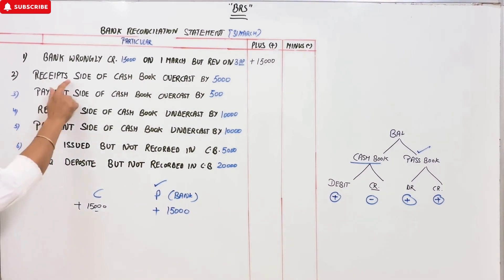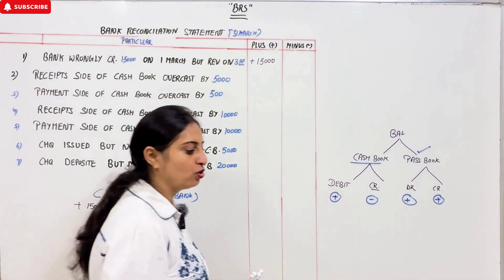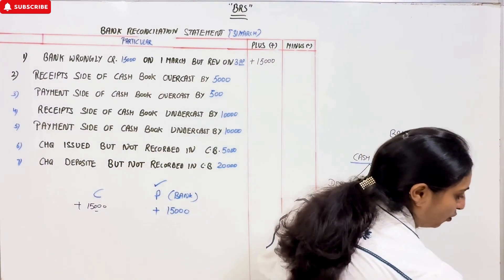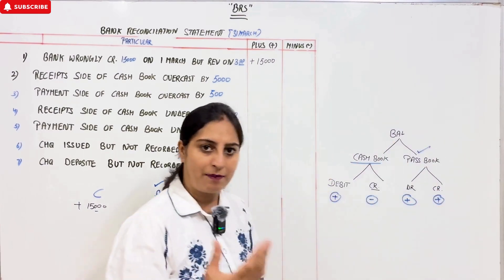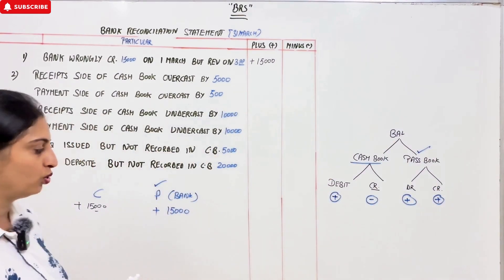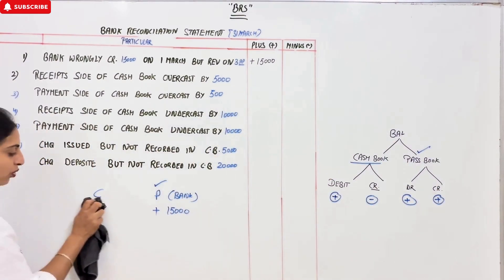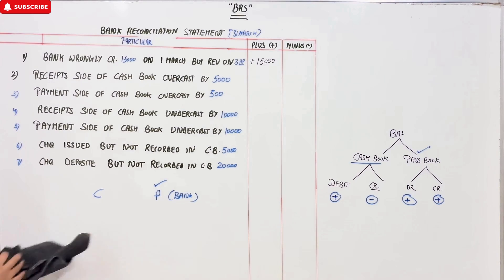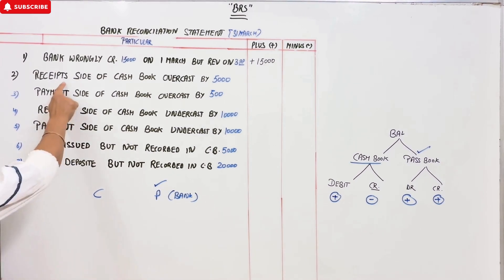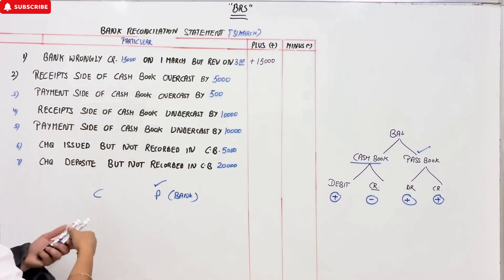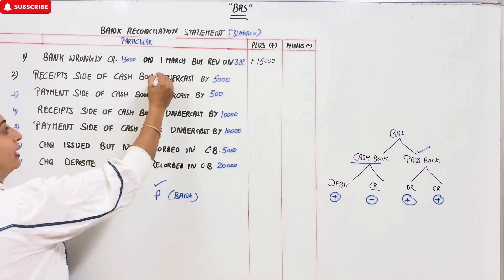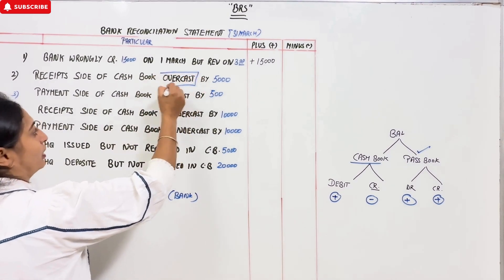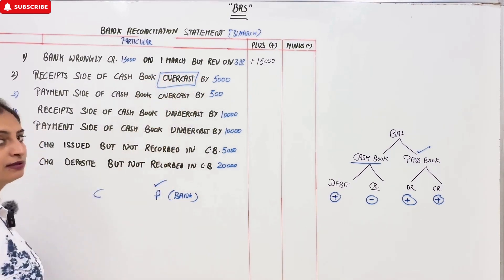Number 2: Receipt side of cash book. Receipt side of cash book — where the cash book is plus. Overcast means it has been recorded as more than it should be. So the receipt side has been overcasted, meaning the cash book shows more than it actually is.